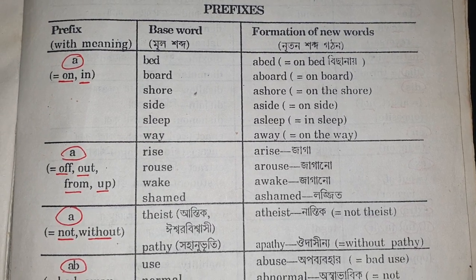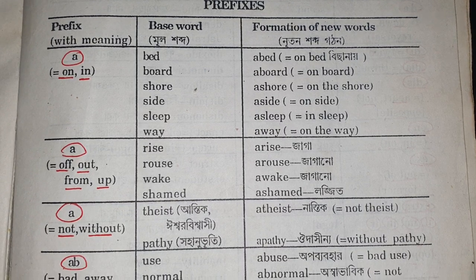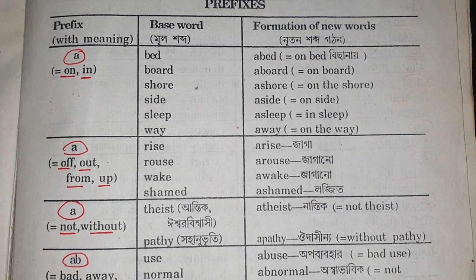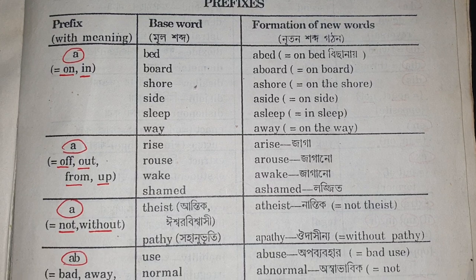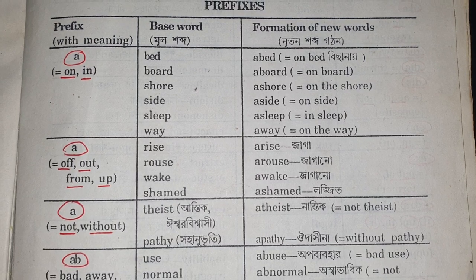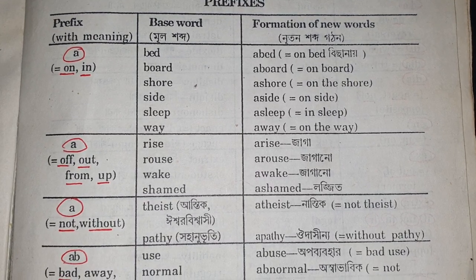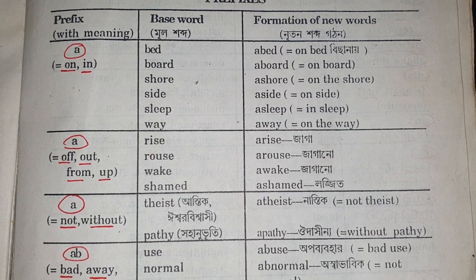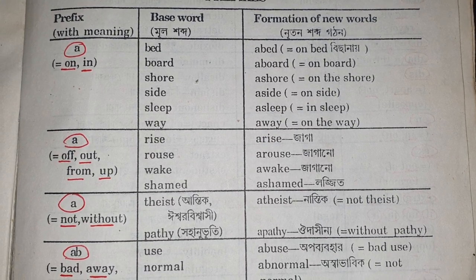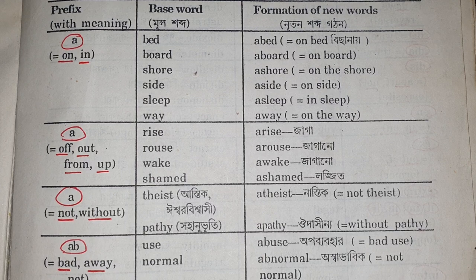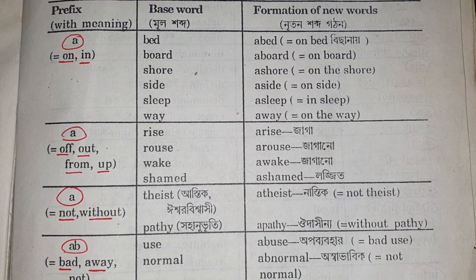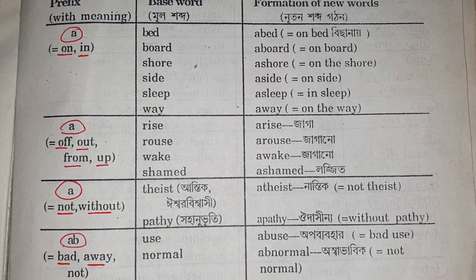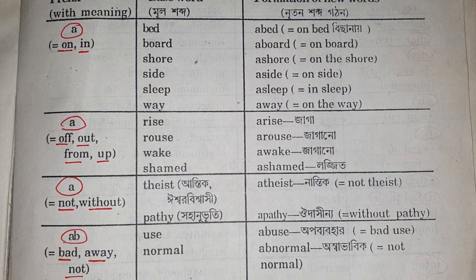At the very beginning you can see there is A with meaning of 'on or in'. Base word: bed, formation of new word: abed, that means on bed. Like this: board — aboard, that means on board; shore — ashore, that means on the shore; aside, on side; sleep — asleep; way — away.